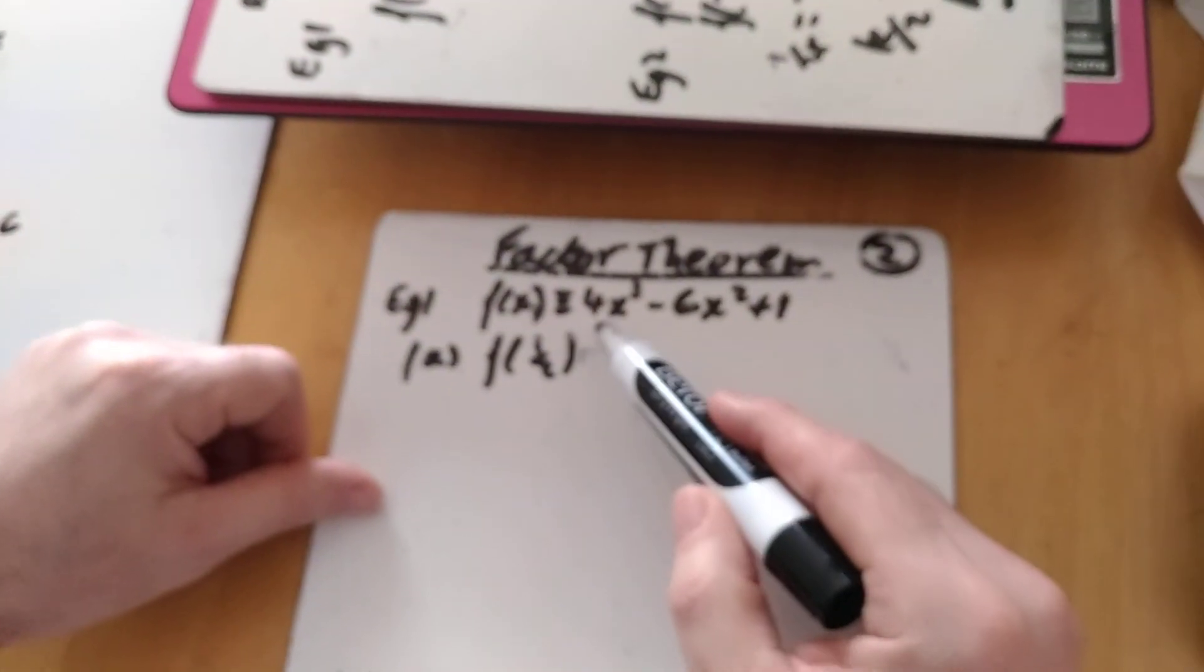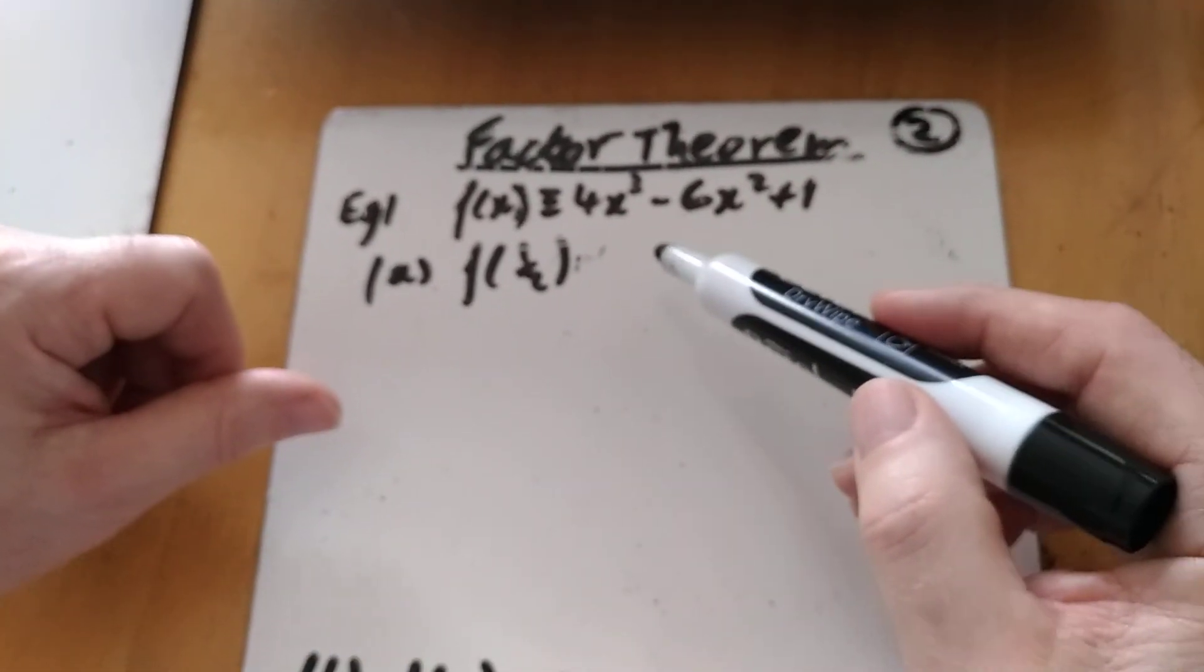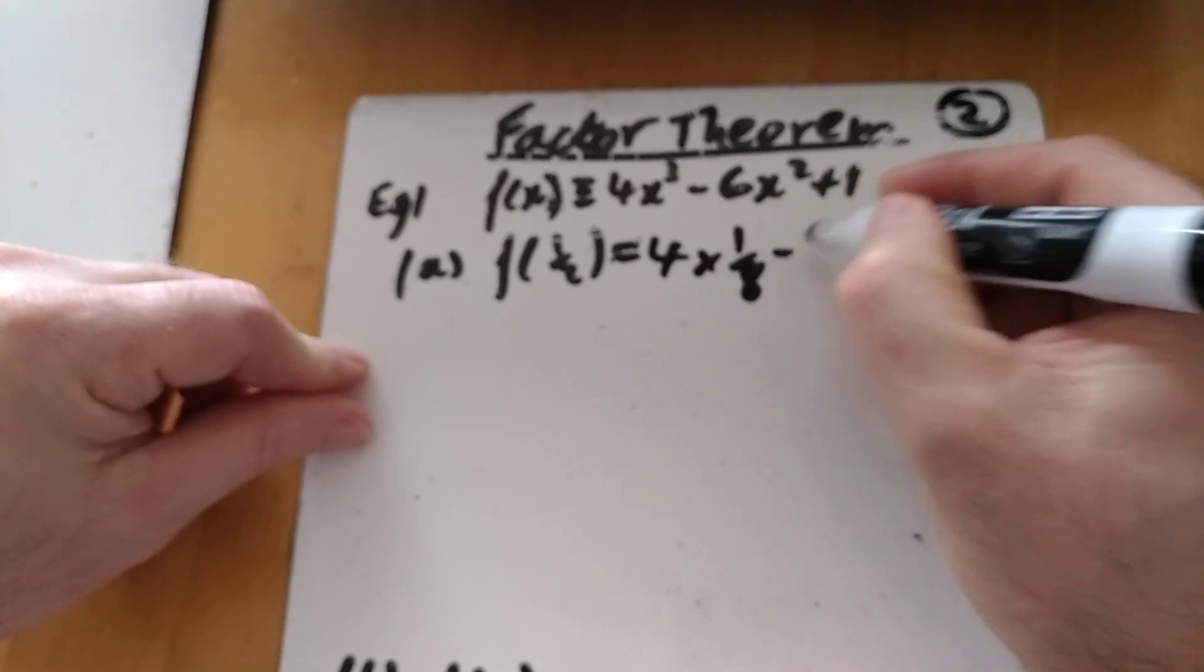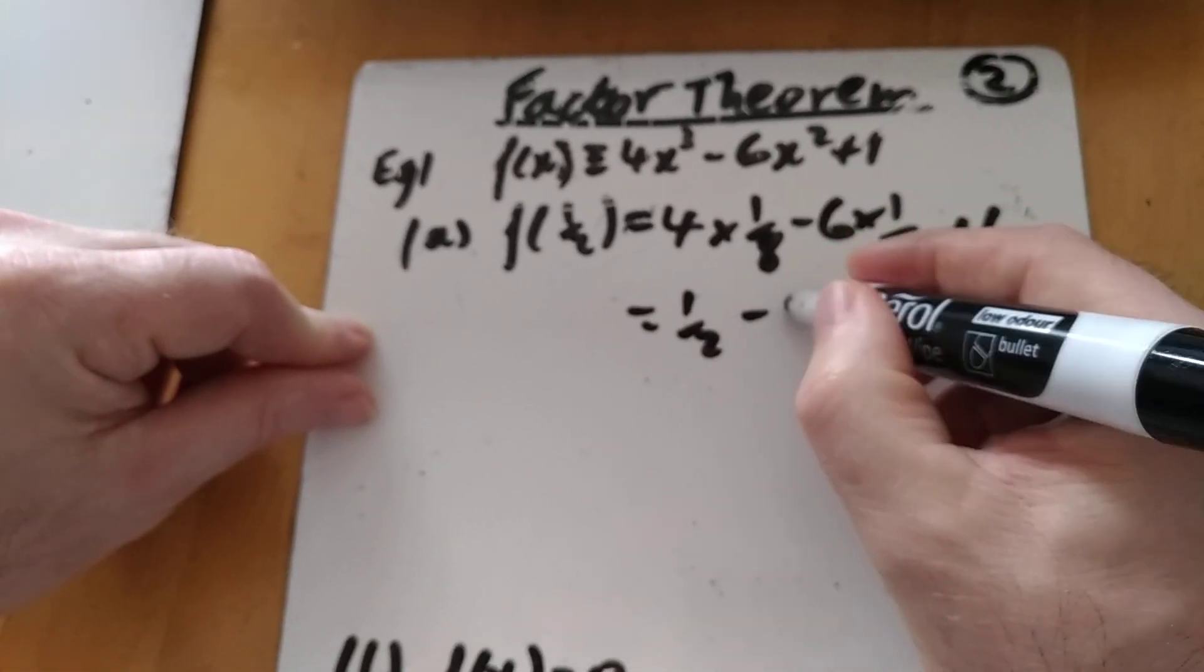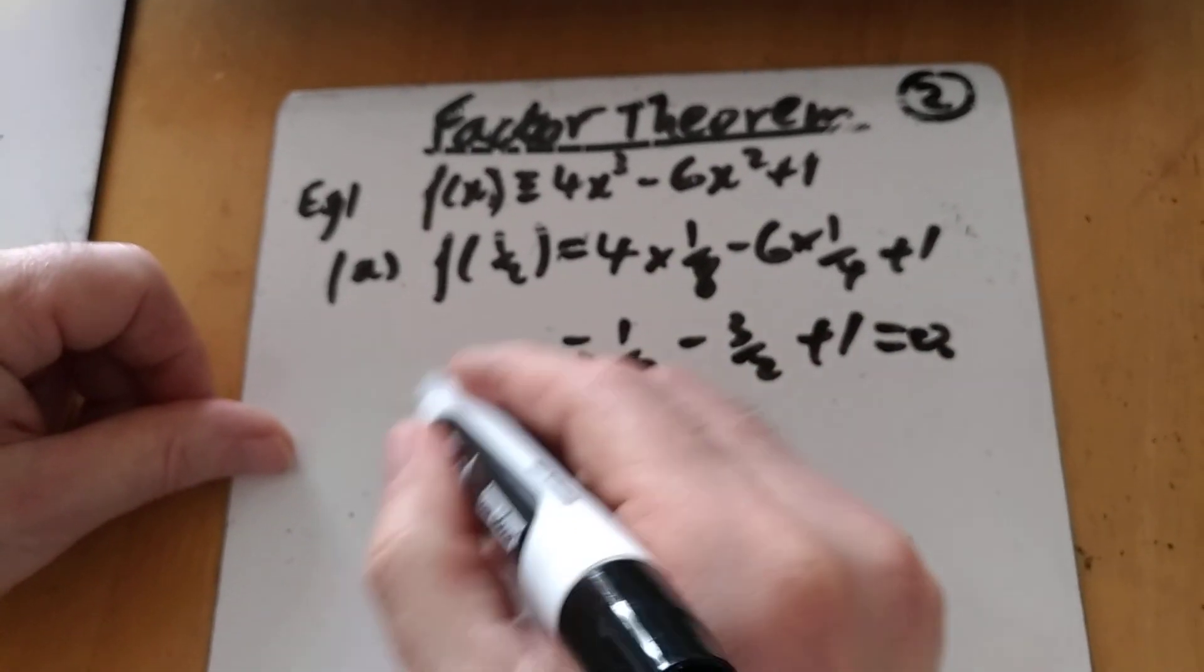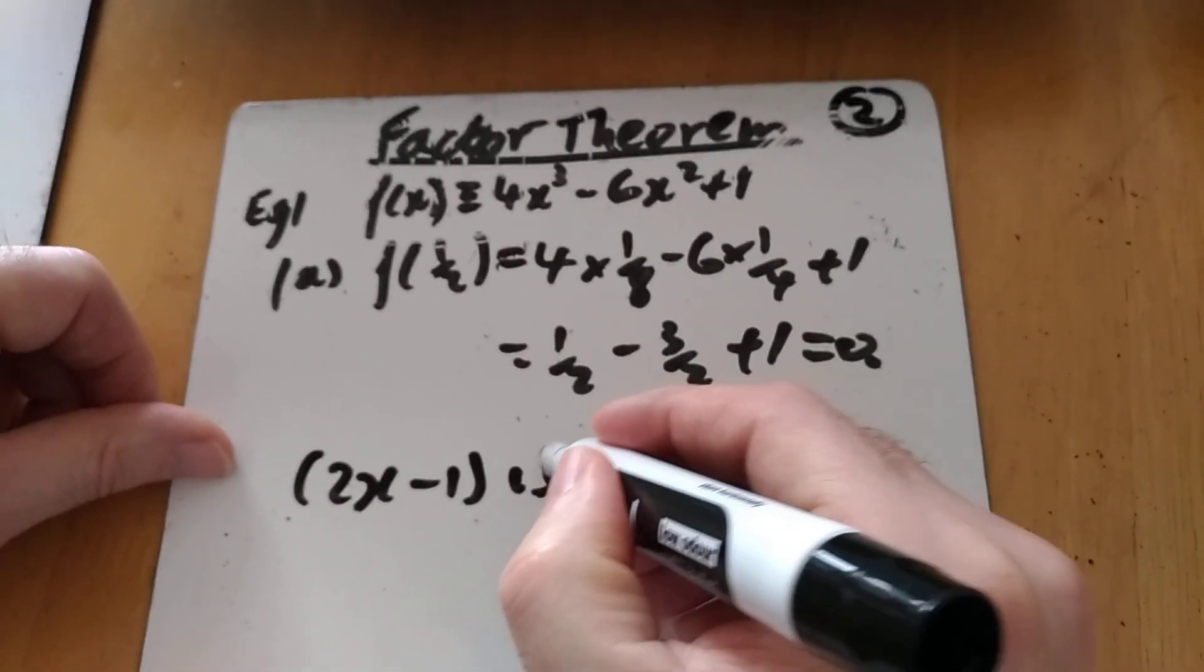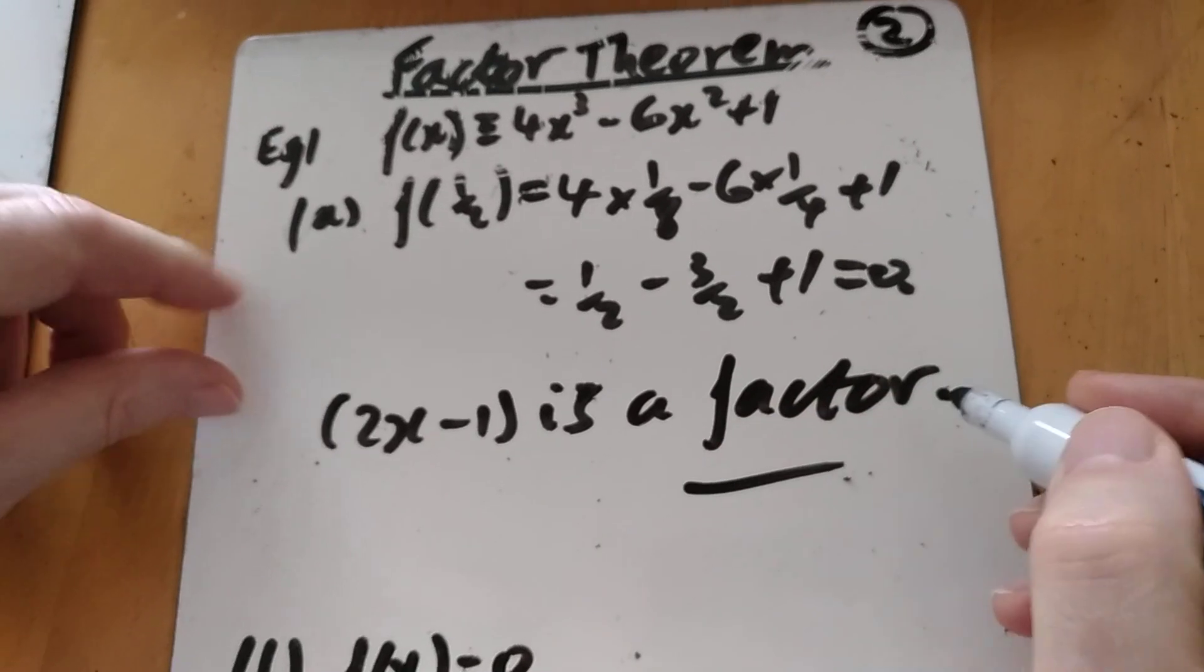First example then. f(x) is equivalent to 4x cubed minus 6x squared plus 1. It says find f of a half, and hence find a linear factor of f(x). I'm expecting f of a half to equal 0. 4 times a half cubed, an eighth, minus 6 times a quarter, plus 1. 4 eighths, a half, minus 3 over 2, plus 1, equals 0. Hey, presto. What that tells me is that a linear factor then, if x is a half makes it a factor, then 2x minus 1. So f(x) of a half equals 0, 2x minus 1 is a factor.